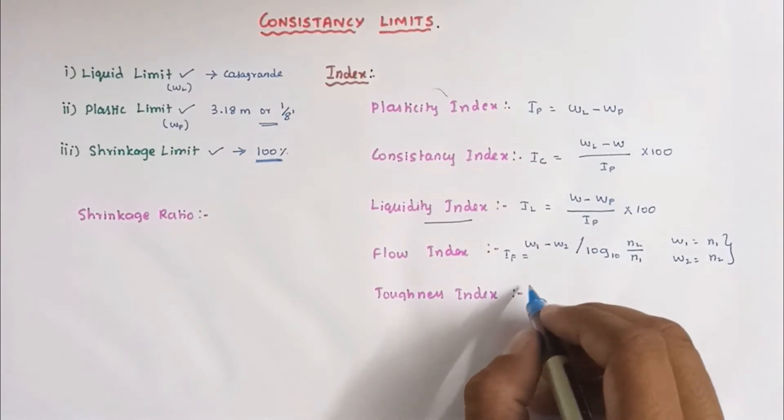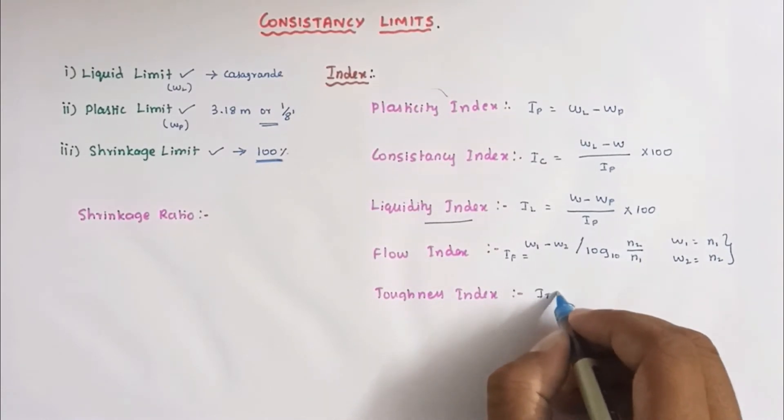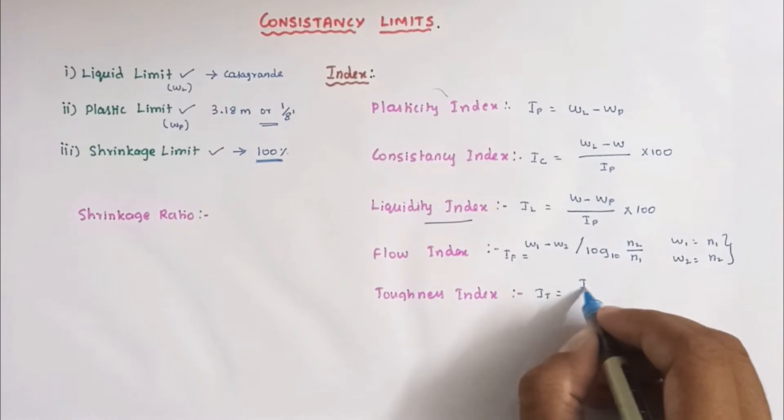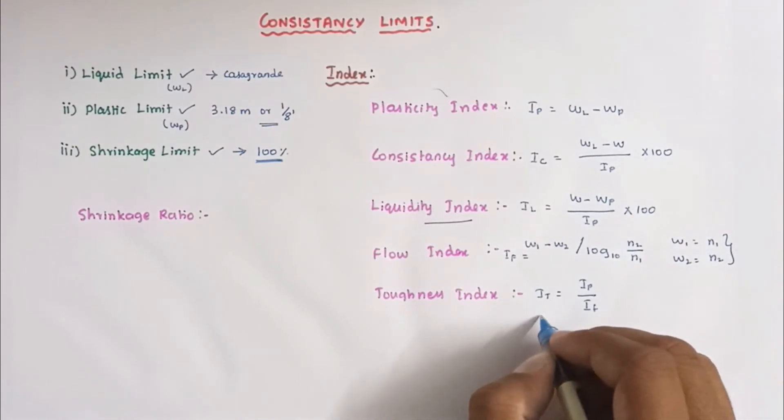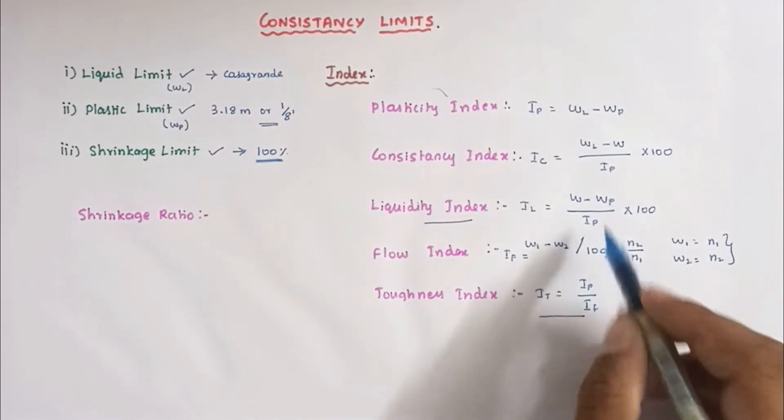Next, toughness index. Toughness index IT equals IP divided by IF. IP is plasticity index and IF equals flow index. We can calculate all the values using those formulas.